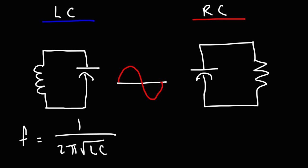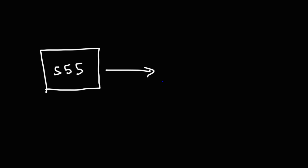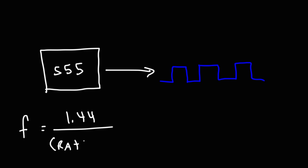With the RC oscillator circuit, the frequency is usually some variation of the formula 1 over 2πRC. Two common examples include the RC phase shift oscillator circuit and the Wien bridge oscillator circuit, and also the 555 timer — all of which simply use resistors and capacitors. The 555 timer can be used to generate a square wave, and the formula for that circuit is 1.44 over (RA + 2RB) times C.